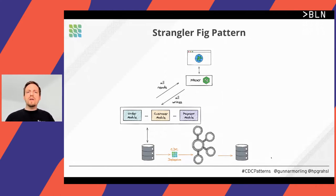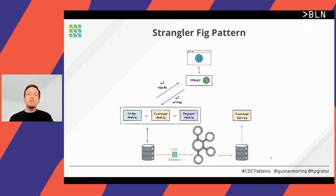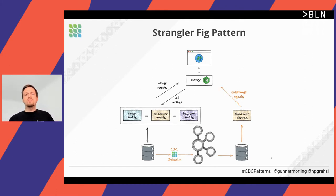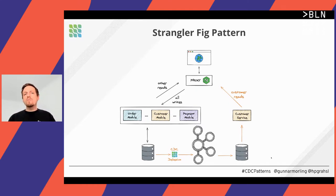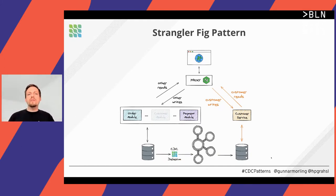Debezium will not only bring existing data over to Kafka topics but will continuously listen to the transaction log and propagate all changes further. Once customer-relevant data is over there, we can focus on the actual migration — writing the customer microservice, starting perhaps with read-only scenarios. Once ready, we reconfigure the proxy to route client requests originally targeting the monolith for reads over to the new microservice.